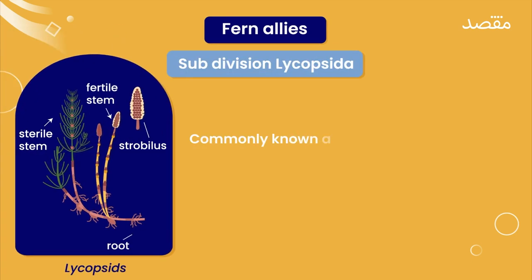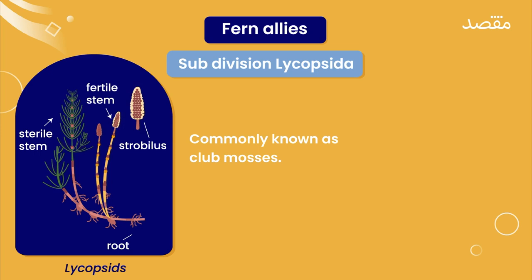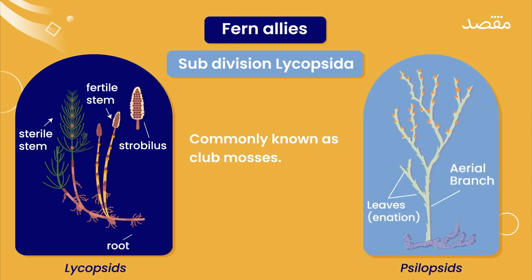In ko generally hum clubmoses kehte hain. They are called clubmoses because they have club shaped structures called strobilus at the tip of their branches. Ab baat karte hain lycopcida ke general structure ki. We learnt in the lesson of xylopsids that they do not have true roots. Instead, unke paas rhizoids hoote hain.